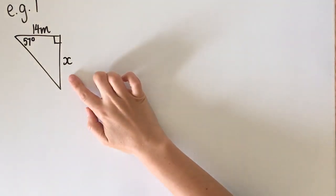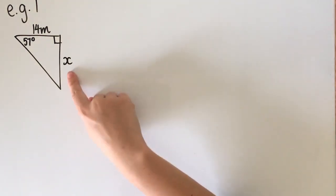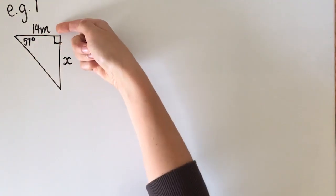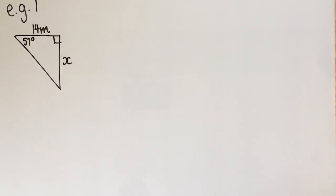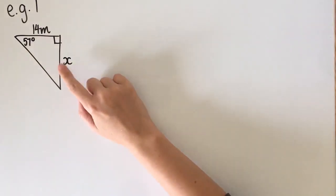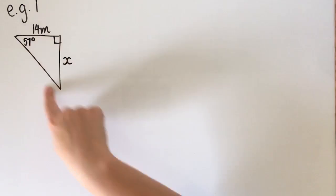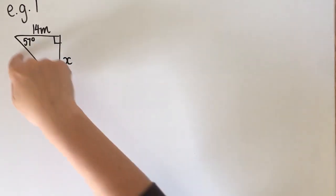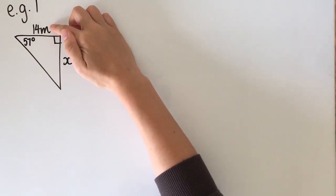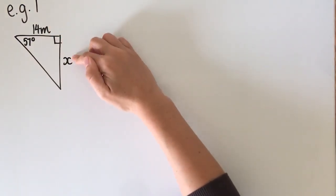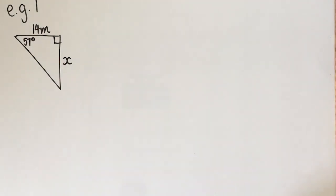For this first example, you can see that we've got an unknown side, a labelled side, and we've been given an angle. The goal is to find what this value is. What matters is the side with a number, the side with a pronumeral, and the angle which has been given a value. The first step of our success criteria is to label the sides O, A, and H.